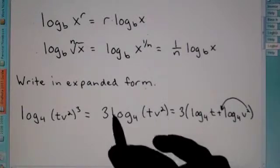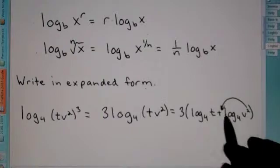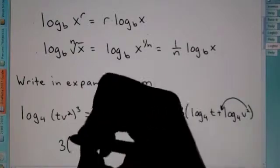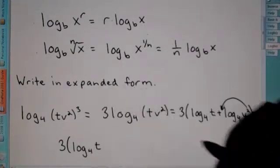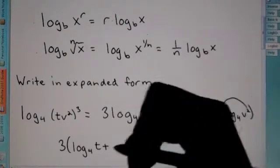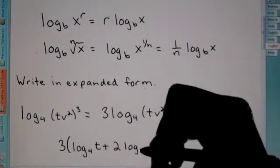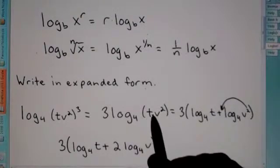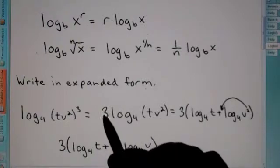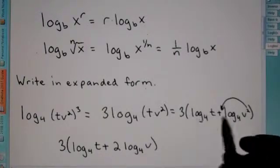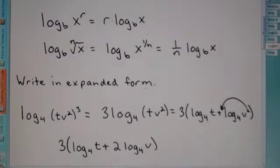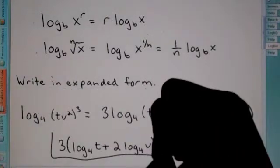Notice the square is only attached to the v, not the t as well. So our final answer: we have the 3 on the outside times the quantity log base 4 of t plus 2 log base 4 of v — because the 2 comes up in front of the second log. We bring the 3 up front of the entire thing and apply it to the whole problem, which is why we put both logs in parentheses. Then to get rid of the squared, we bring that out front. So this is your final answer.